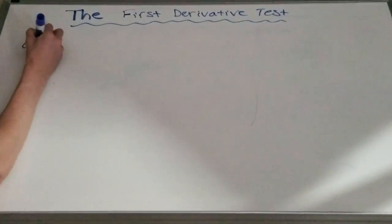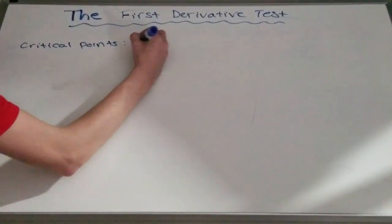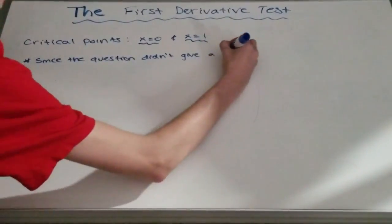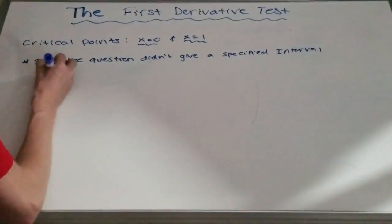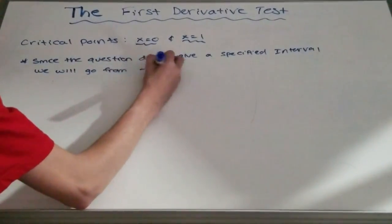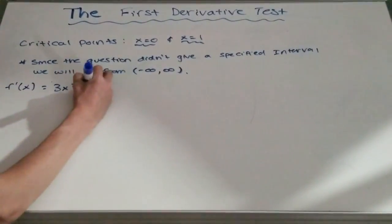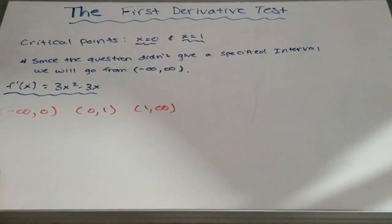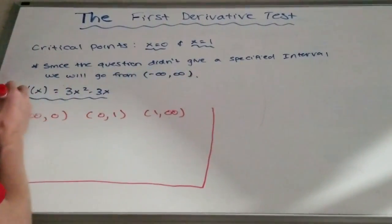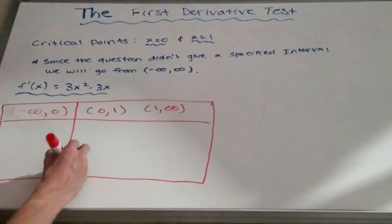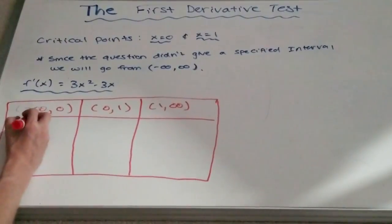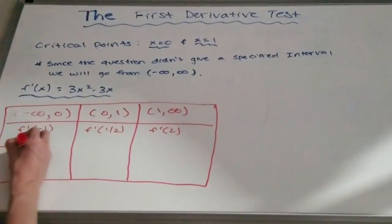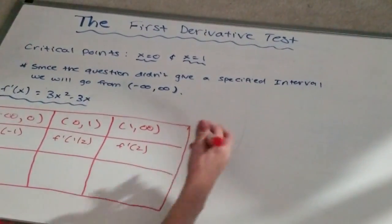Now that we've found the critical values, which are zero and one, we can figure out when the function is increasing or decreasing. Since the problem didn't mention a set interval, we're going from negative infinity to infinity. Therefore, the intervals are: negative infinity to zero, zero to one, and one to infinity. We got these by going from negative infinity to our lowest critical number, between the two critical numbers, and from the highest critical number to positive infinity.